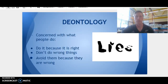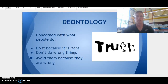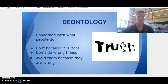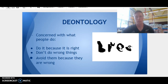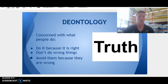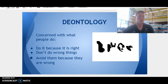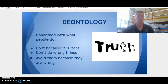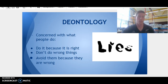Deontology is concerned with what people do, not the consequences. Deontologists focus on the action, not on the consequences of an action. So they would say: always do the right thing, do it because it's the right thing to do, never do wrong things, and avoid certain things because they're just wrong.